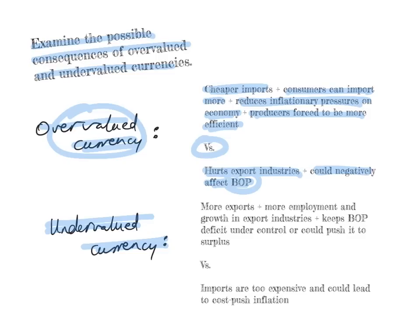What about the consequences of an undervalued currency? You'd be able to export more, so many countries with huge export industries prefer having a slightly undervalued currency. This creates more employment and growth in export industries and keeps the balance of payments deficit under control — it could even push it into a surplus. The trade-off is that imports become too expensive, and if the country relies on imported raw materials, this could lead to cost-push inflation. In both scenarios there's always a trade-off, and no situation is absolutely better — it really depends on the context of the country and its priorities.